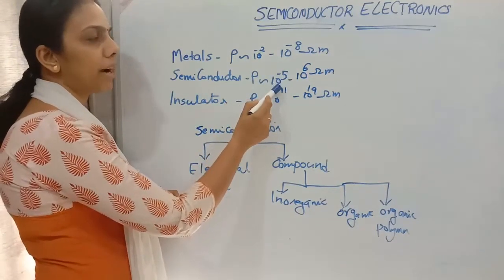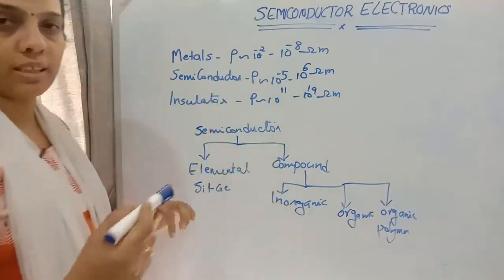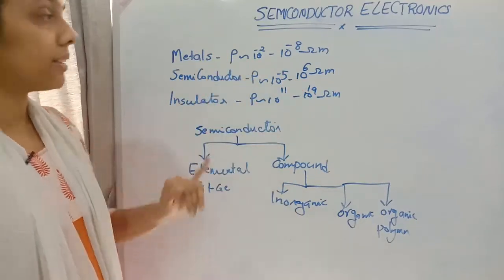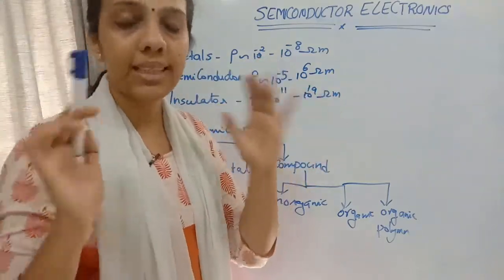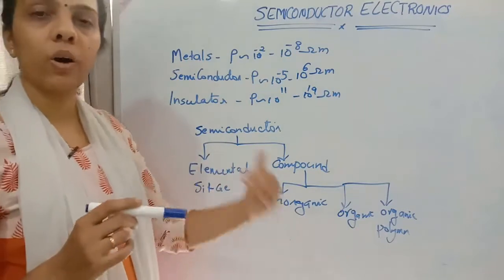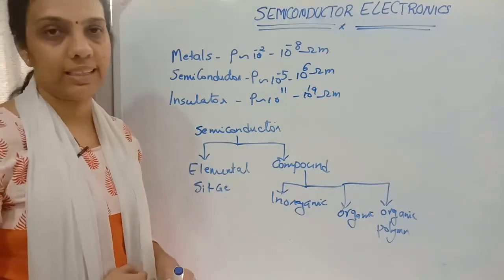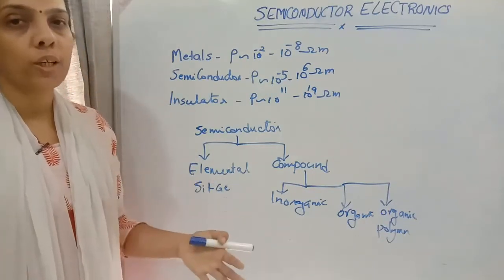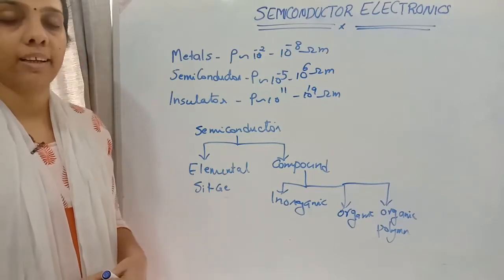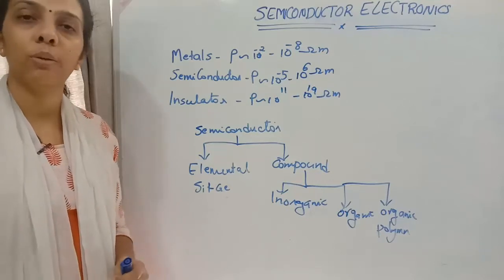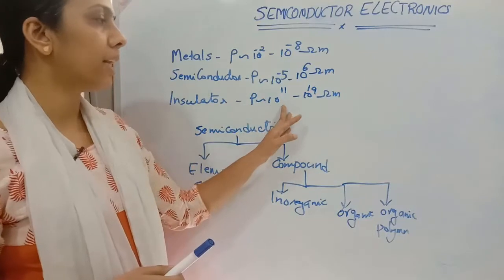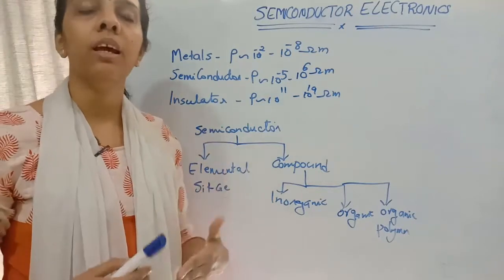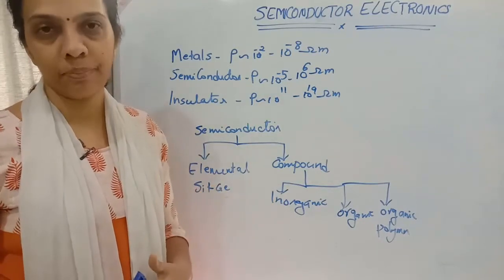The resistivity of semiconductors ranges from 10⁻⁵ to 10⁶ ohm·meter. As resistivity increases, resistance also increases — resistivity is the characteristic property of a material. Insulators are solids that won't convert to conductors regardless of the energy given. Their resistivity is very high, ranging from 10¹¹ to 10¹⁹ ohm·meter, so electrons cannot move freely and they cannot conduct electricity.